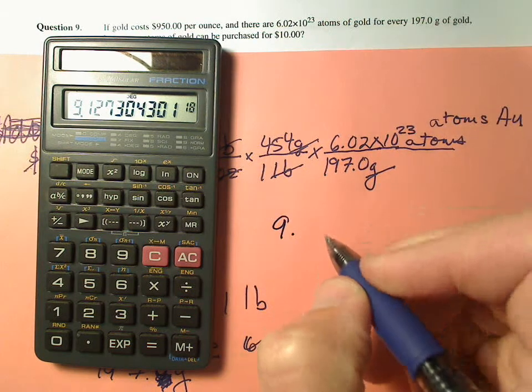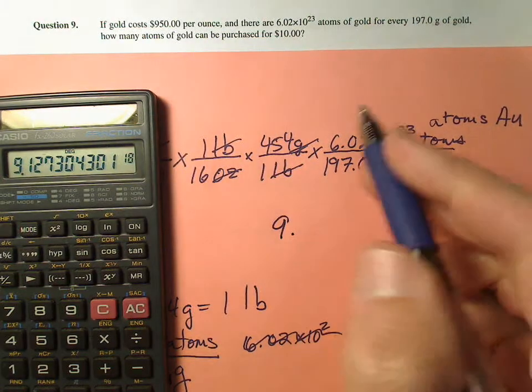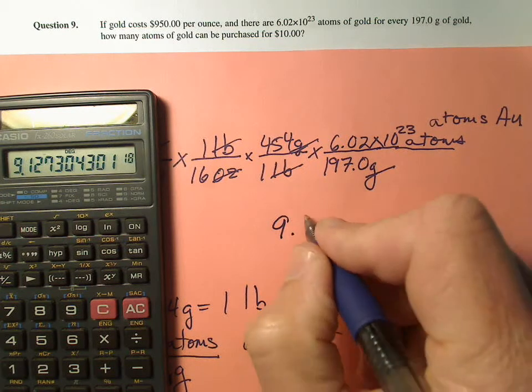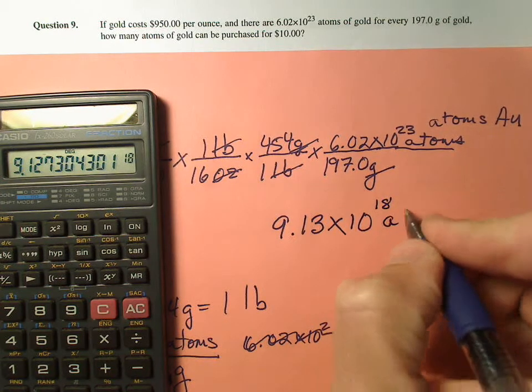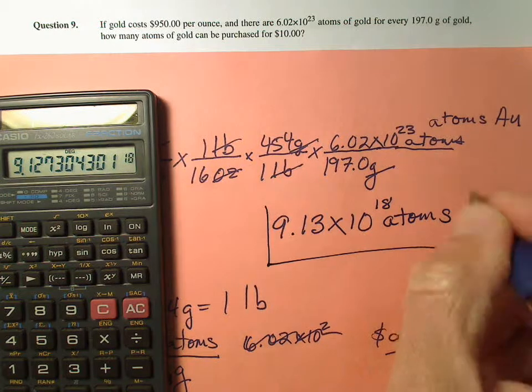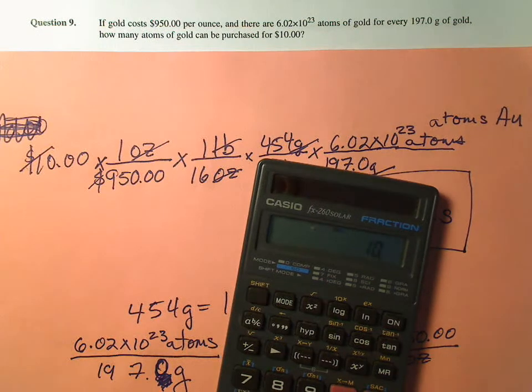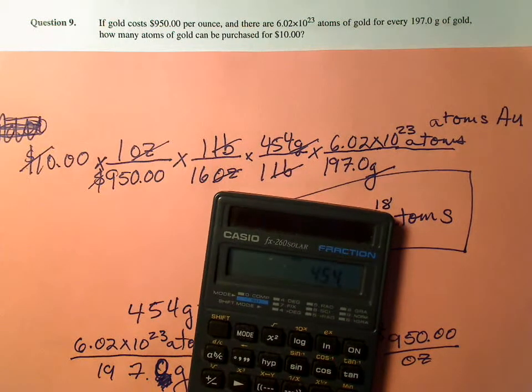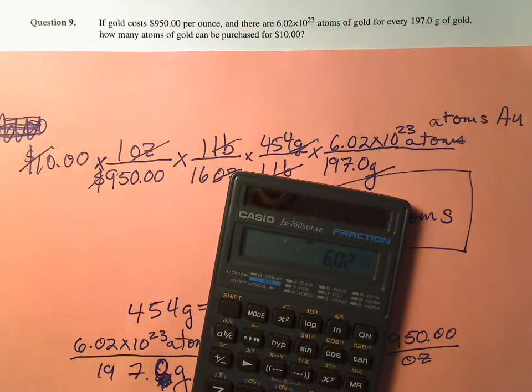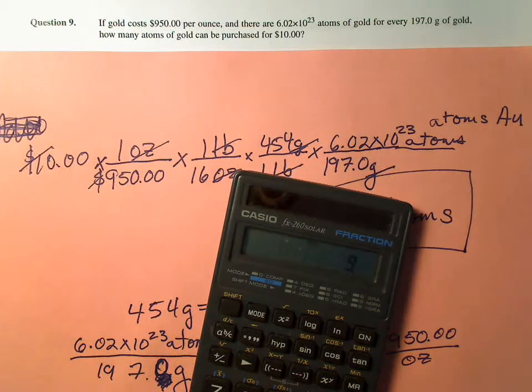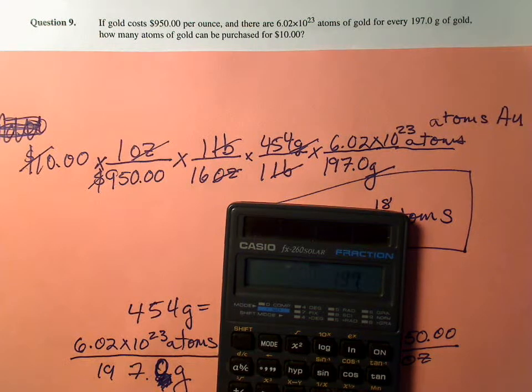So we've got 9 point - how many sig figs should we have? We've got 3 there, 4 there, 4 looks like 3. So 9 point - what is that? 1, 3 times 10 to the 18 atoms. Let me double check my calculation real quick. 10 times 454 times 6.02 E23 divided by 950 divided by 16 divided by 197, equals.